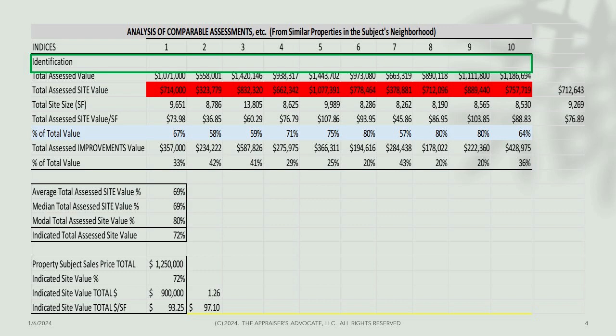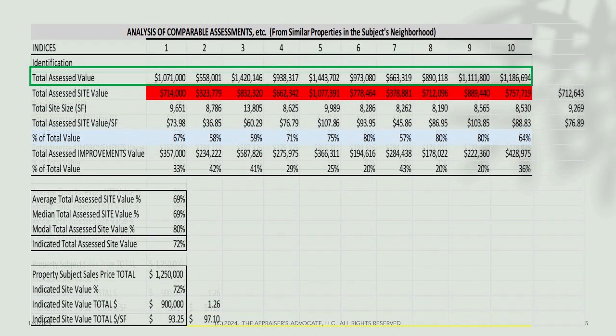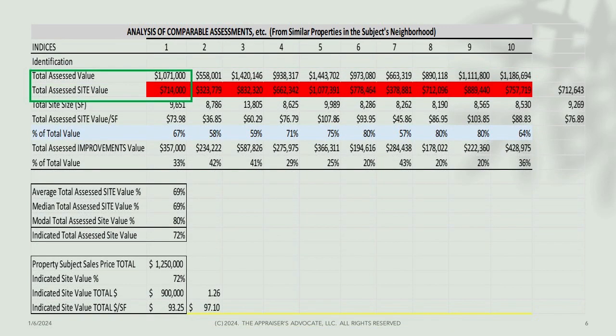On the first line, enter the property address or some other identification. That way, if you need to replicate the data, you don't have to reconstruct your research — merely look up the address. Next, you'll enter the assessed value for the entire property. This is necessary since eventually the spreadsheet will calculate the pro-rata value of the vacant site based on the total assessed value of the entire property. Next, you enter the separate site assessment, already shown on the grid in red. For comparable assessment number one, this property's tax burden is based on a total assessment of $1,071,000, of which $714,000 is the assessment on the site.